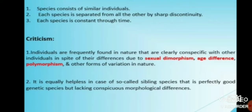Similar individuals form a species, and each species is separated from all others by sharp discontinuity. Each species is conserved through time. Criticism: individuals are frequently found in nature that are clearly conspecific with other individuals in spite of their differences due to sexual dimorphism, age differences, polymorphisms, and other forms of variation in nature.